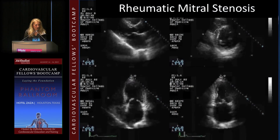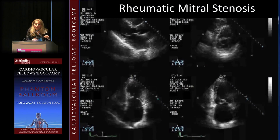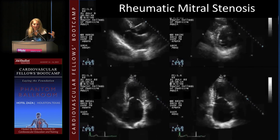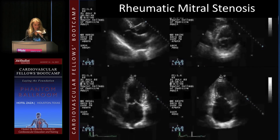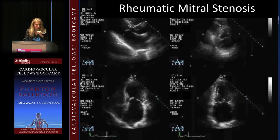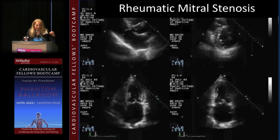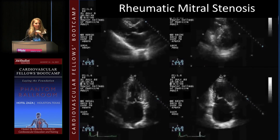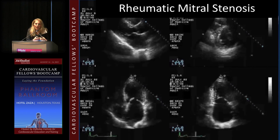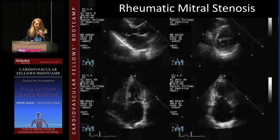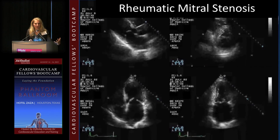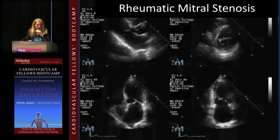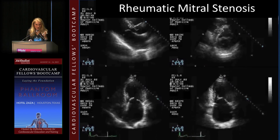On echocardiography, because the commissures are fused, the valve cannot open completely. The anterior leaflet in the upper left panel opens like a hockey stick — we call that a hockey stick deformation of the anterior mitral leaflet. In the short axis, you can see the commissures are fused on either edge, so it opens like a fish mouth. The lower panels show that valve opening is restricted during diastole, leading to incomplete emptying of the left atrium. The left atrium increases significantly, and the most common complication is atrial fibrillation.